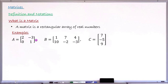Going back to the first matrix, you have two numbers in each row, so it is rectangular. Moving to the third matrix, capital letter C equals: you have one number in each row and three rows. So this is also another rectangular arrangement of numbers, and these are samples of what we call a matrix.